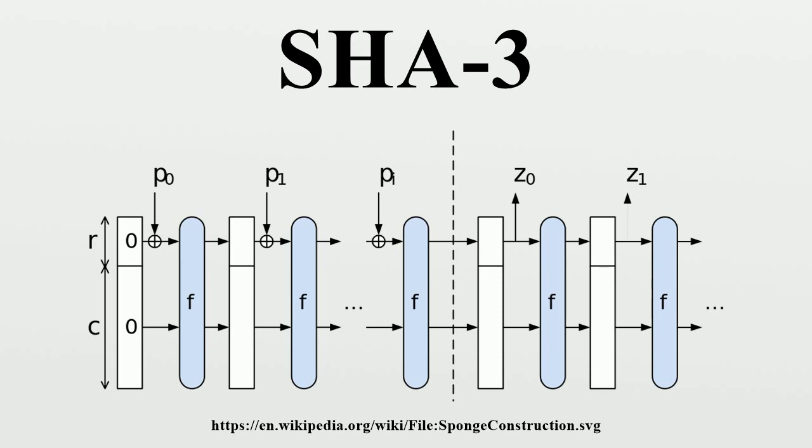Iota: exclusive-or a round constant into one word of the state. To be precise, in round n, for 0 ≤ m < w, A[0,0,2^m-1] is exclusive-ored with bit m+7n of a degree-8 LFSR sequence. This breaks the symmetry that is preserved by the other sub-rounds.